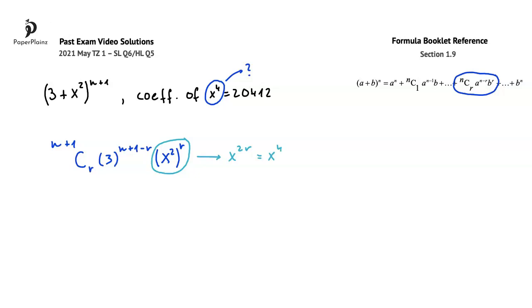We have the same base on both sides of this equation, so we can write that 2r is equal to 4, hence r is equal to 2.